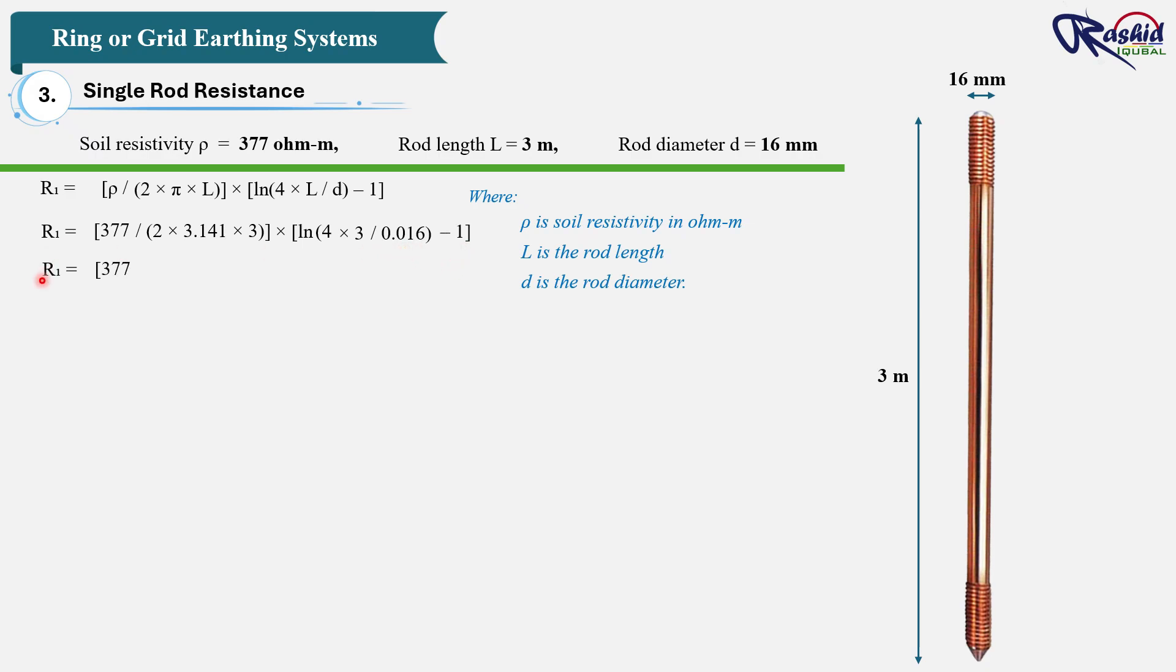So R₁ = 377 / (after solving this small part, it becomes 18.85) × ln (and after solving this small part, it becomes 750). So once we solve this equation, we get R₁ = 112 ohms. That means a single 3 meter rod in this type of soil gives about 112 ohms, which is very high and not acceptable for most installations.